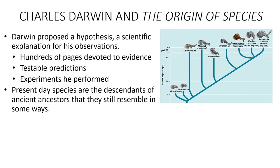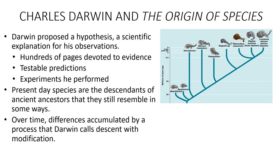In this image you can see ancient ancestors of elephants. Today we only have two types left — the Asian and African elephant — but in the fossil record you can see these other ancestral types, and you can see that modern elephants resemble those ancient ancestors. Over a period of time, differences start to accumulate. This process is called descent with modification, a very important concept.